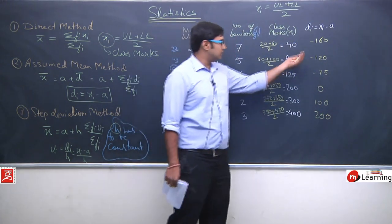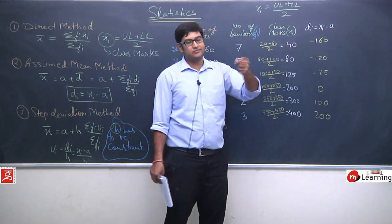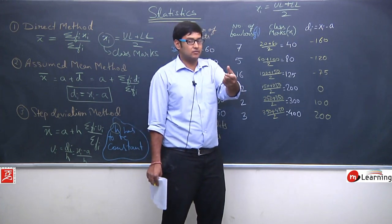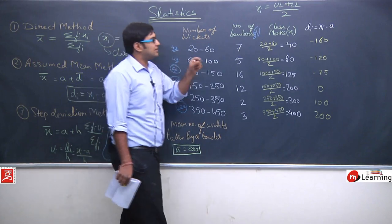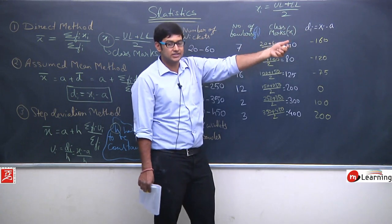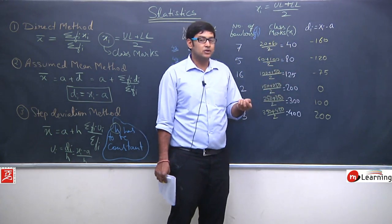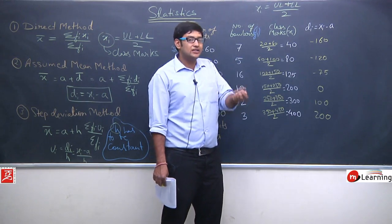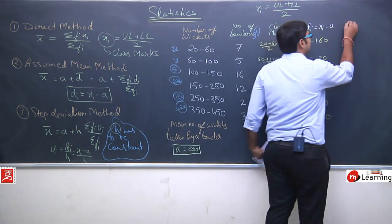Looking at d_i values, the only common factor is 5. You could apply step deviation by dividing by some value, but since the class interval is not constant, some values would come out as decimals. Since we have d_i and f_i available, let us just multiply these two values directly.